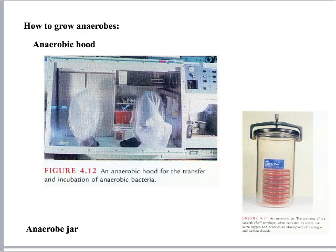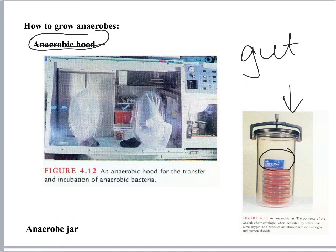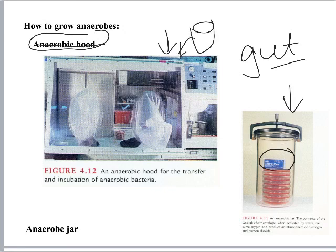When working with gut organisms, researchers need an anaerobic environment to grow the bacteria. One method is an anaerobic jar — you seal your plates inside, add water to a gas pack envelope that contains a catalyst, and the catalyst consumes the oxygen and produces CO₂. Every time you open the jar, oxygen gets in. Another method is an anaerobic hood, like a glove box, used in campus labs studying gut microflora. A CO₂ tank pumps gas in to keep the environment anaerobic.